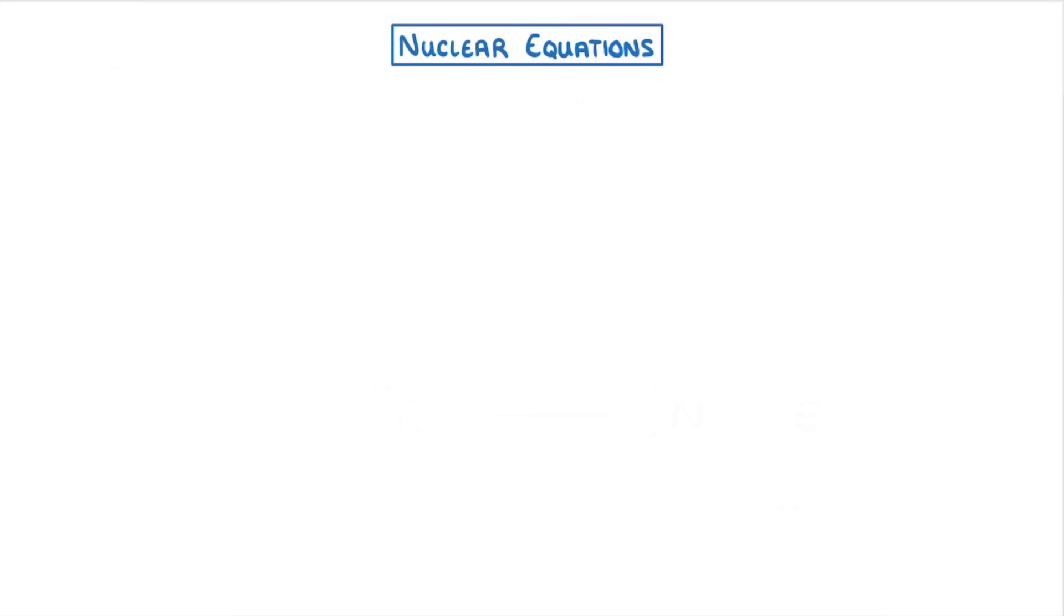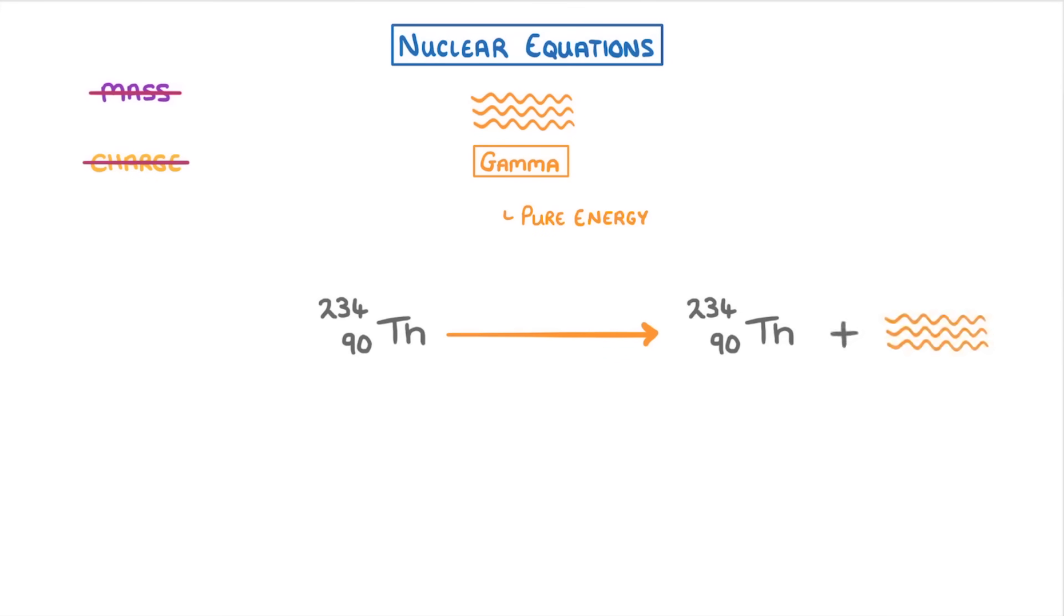The easiest type of radiation to show is gamma radiation. Because gamma radiation is pure energy and doesn't have any mass or charge, it doesn't change anything. So if our thorium-234 from earlier underwent gamma decay, it would just go to form thorium-234 again, plus a gamma ray, which we show with the Greek letter gamma.